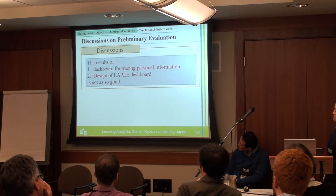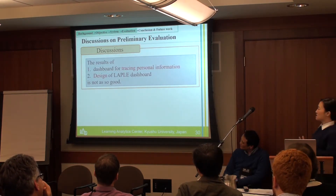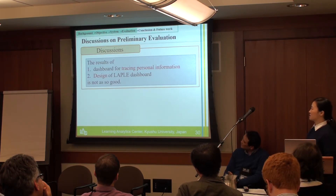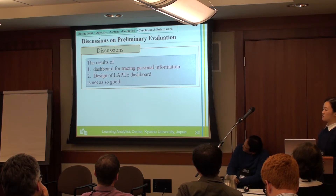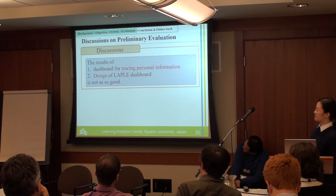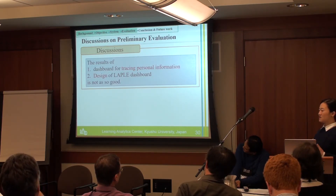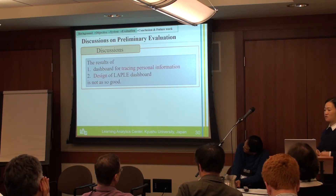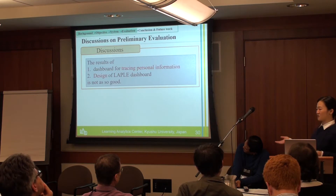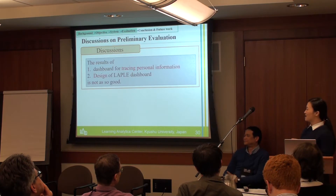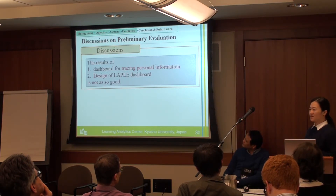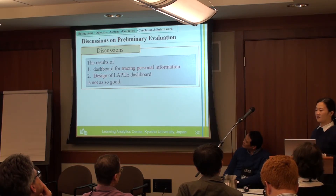Inside the results, we found some parts were not so good. The dashboard for tracing personal information had an issue: it is not possible to locate a student to ask their name in the classroom. Although teachers know a student is in trouble, they can't identify which student it is. Furthermore, some teachers gave feedback that the dashboard is a little difficult to use — there are too many charts in one learning dashboard, so we need to redesign it in the future.